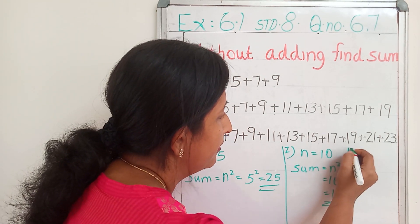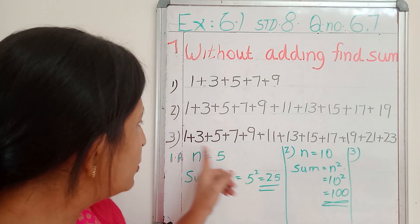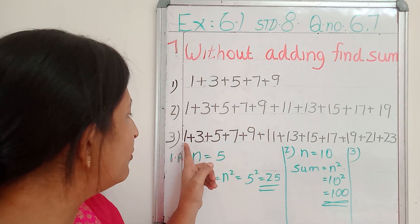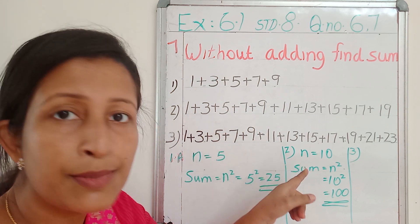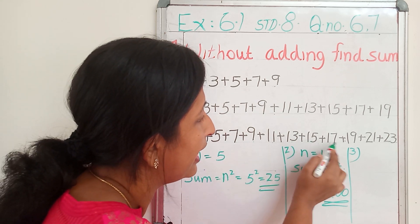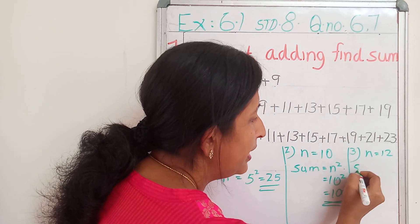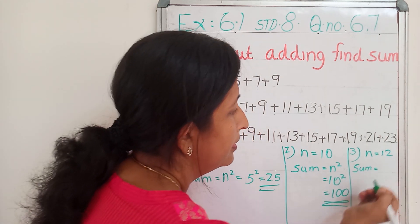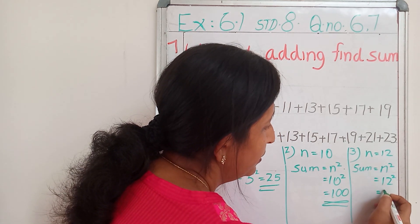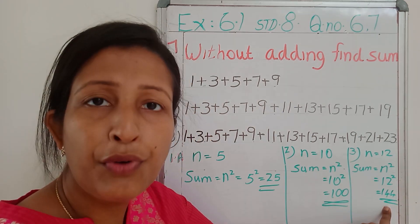Then the third one: 1 plus 3 plus 5 plus up to 23. Here too, all numbers are consecutive odd numbers, and these numbers are starting from 1 itself — then only we can apply this property. So how many numbers? 1, 2, 3, 4, 5, 6, 7, 8, 9, 10, 11, 12. So n equals 12, sum equals n square equals 12 square equals 144. So if you are adding all these numbers, you will get 144 as the sum.